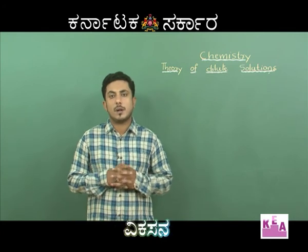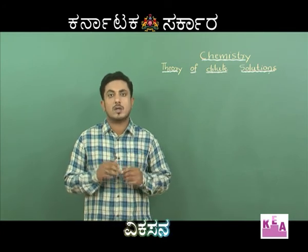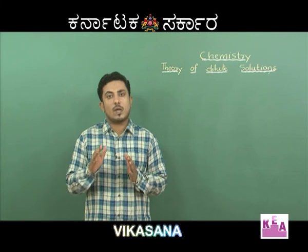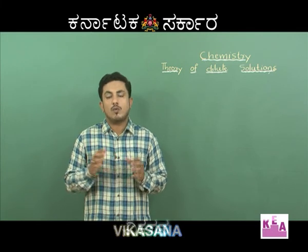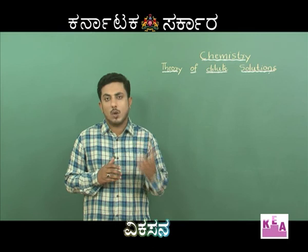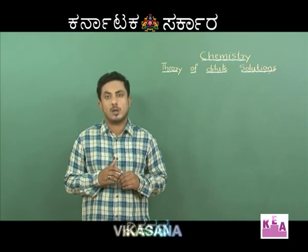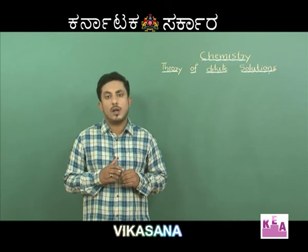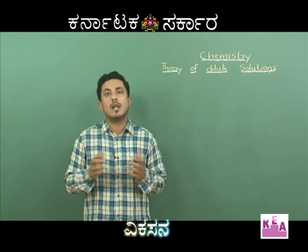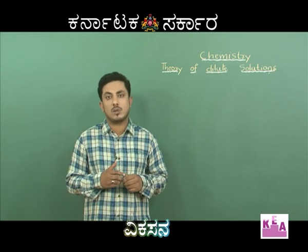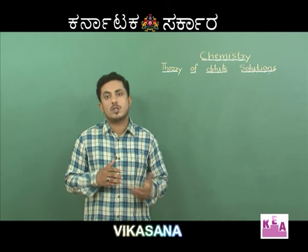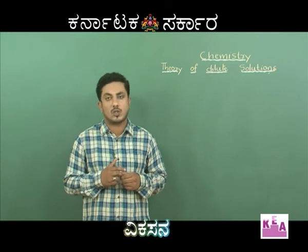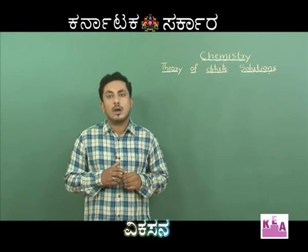In this chapter, we will be dealing with concepts related to solubility of gas in a solution, a solution of liquid in liquid, and colligative properties like lowering of vapour pressure, relative lowering of vapour pressure, osmotic pressure, depression in freezing point, and elevation in boiling point. We will also deal with ideal solutions, non-ideal solutions with positive and negative deviations from Raoult's law, and the Van't Hoff factor.